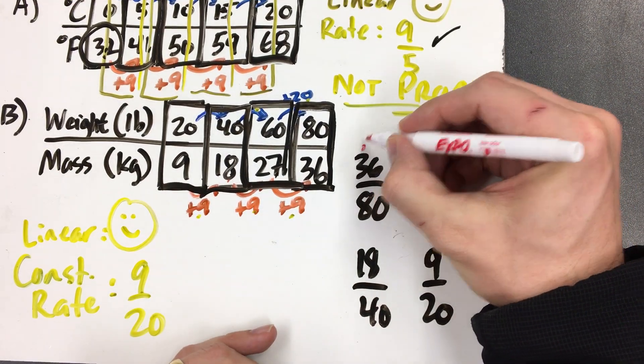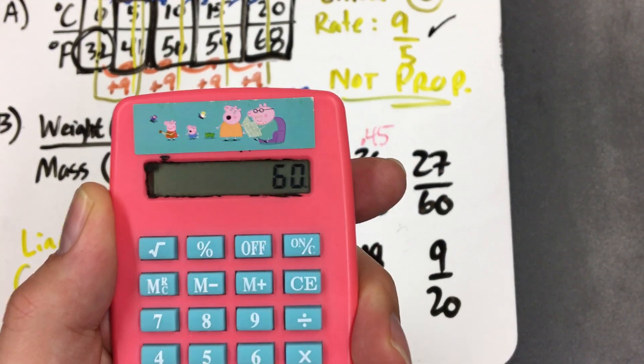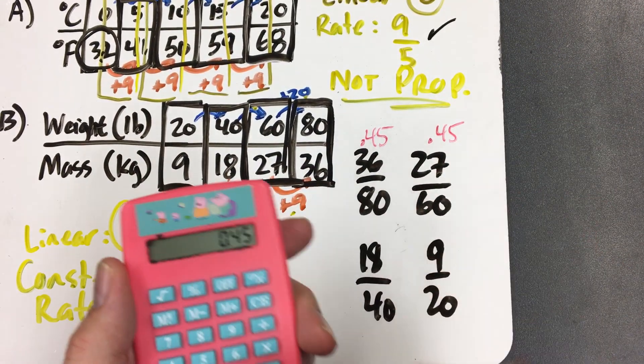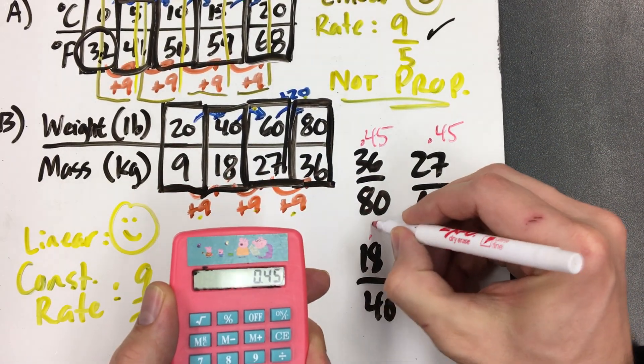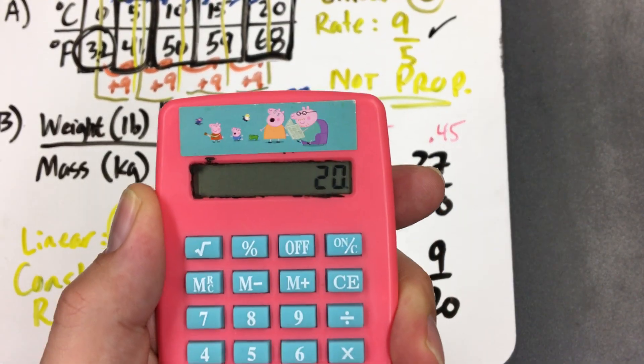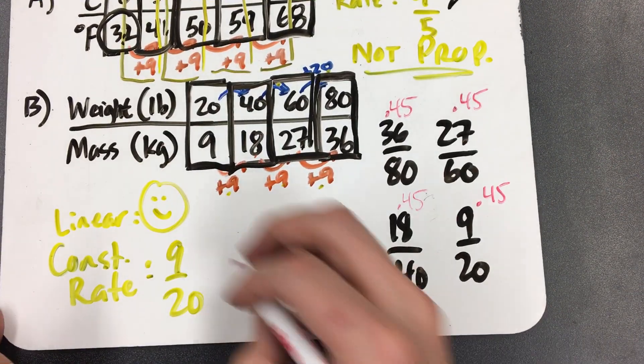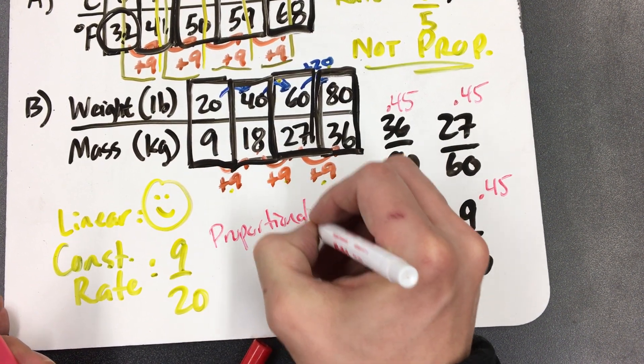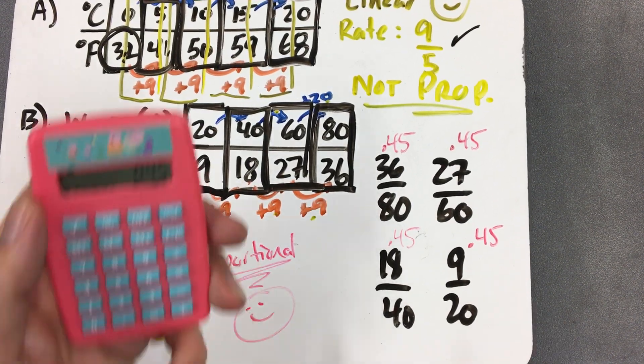If I'm going to do the next one, 18 divided by 40. Boom. Same thing. All these, I'm three for three. Now, I've got to get all four. I can't just do three. It's got to be every single one. Perfect. Look at this. All of these are 0.45. So is this a proportion? Yes, this is proportional. 0.45 on all of them.